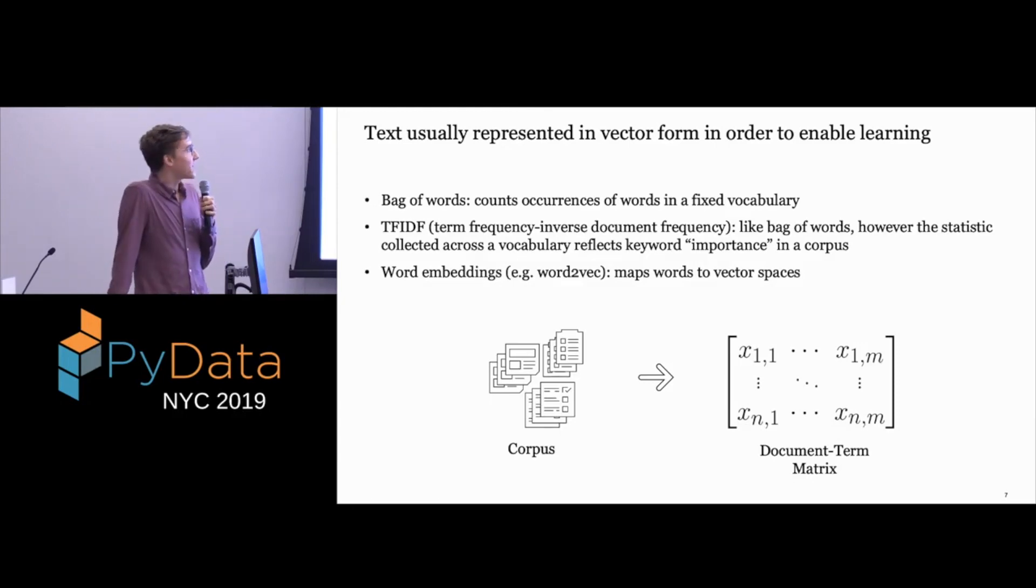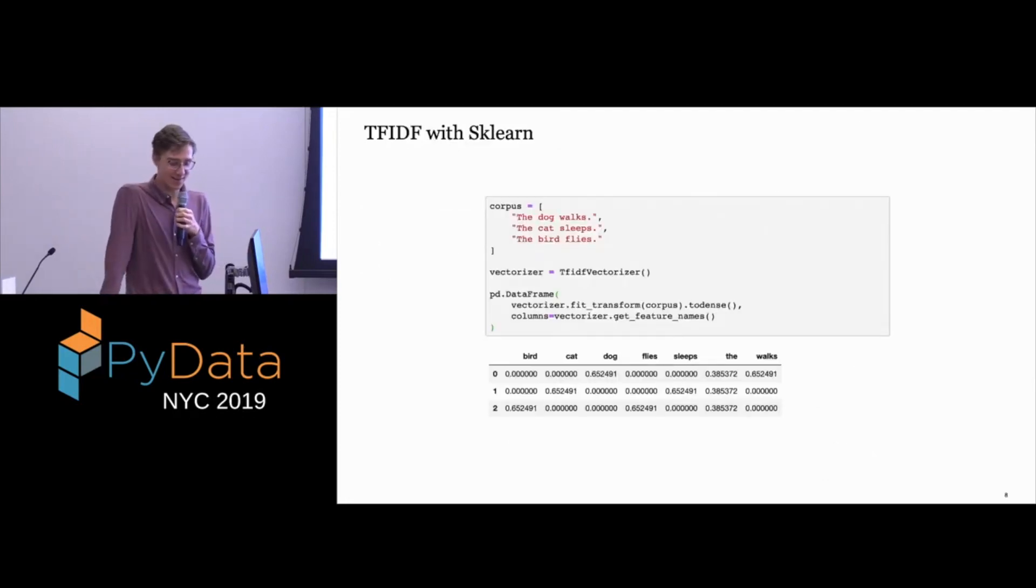Then you also have even fancier word embeddings like Word2Vec, where you're mapping words to vector spaces, where you get all those cool results where you add two words together and get a different word that's kind of related to it. Let's see what this looks like in Python, because we are at PyData. If we have this very simple corpus, this is more to just establish a running example. We would just instantiate our TF-IDF vectorizer from scikit-learn, fit transform, and then turn it back into a dense matrix. Set the columns to our feature names, and this is what you get. It's what you would expect. 'The' has a very low weight in all of the documents because it occurs in all of them, and those words that are unique to each document have higher weights.